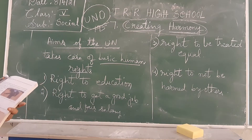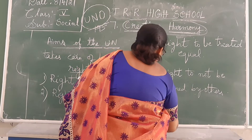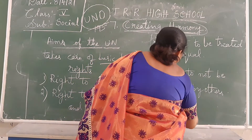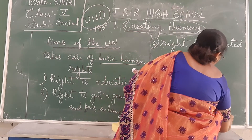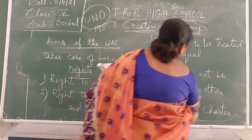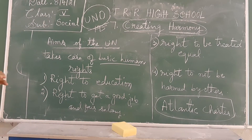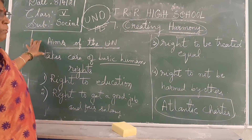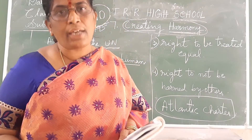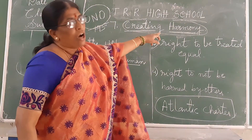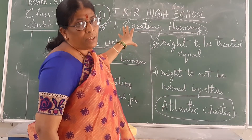All these aims of the UNO are written and explained in a document called the Atlantic Charter. These are all the main aims of the UNO. We are mainly keeping the world peace — maintaining peace in the world — by stopping wars and conflict. That is only creating harmony.